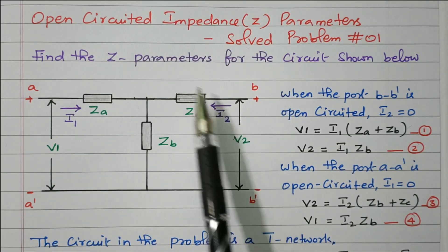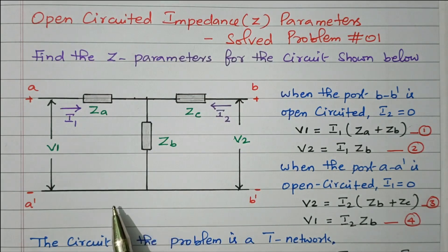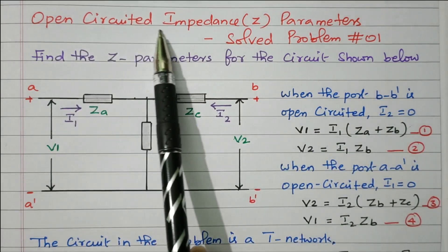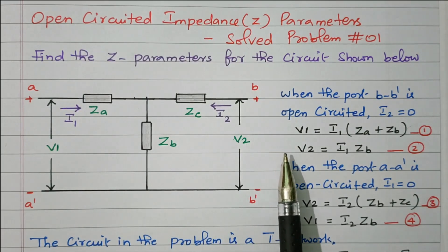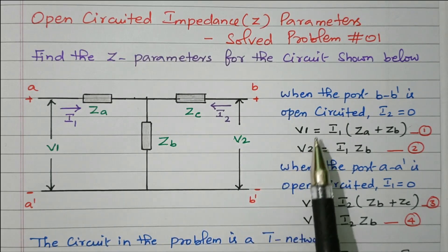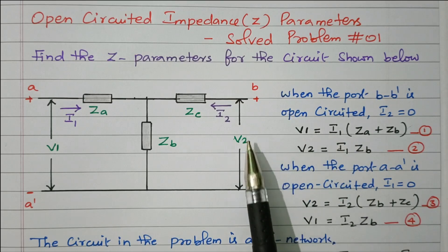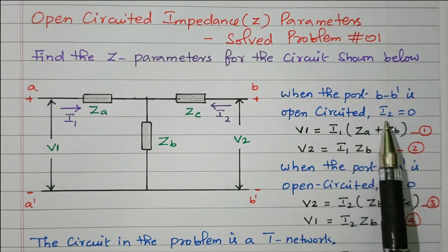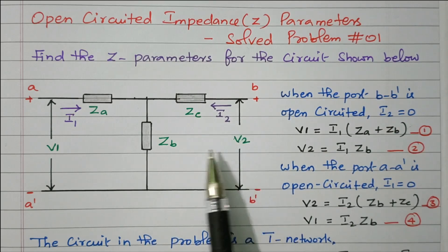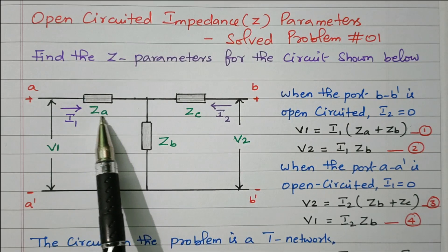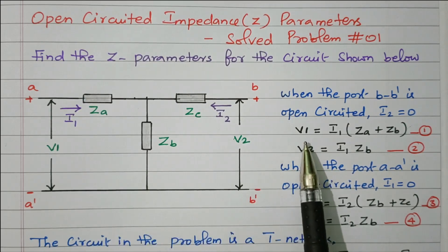Based on that, we need to find the four Z parameters. First we will frame the equations from the given network, then we will find the Z parameters. When port BB dash is open circuited, that is the open circuit input impedance condition — we keep one port open and calculate the remaining values. We keep output port BB dash in open circuited condition. When it is open circuited, I2 is zero because of the open circuit. The current will flow through ZA and ZB; ZC is not taken into account because current will not flow through it. So the total impedance is ZA plus ZB.